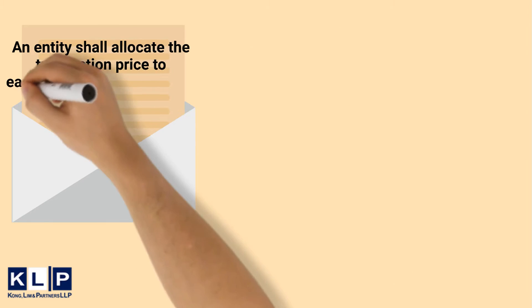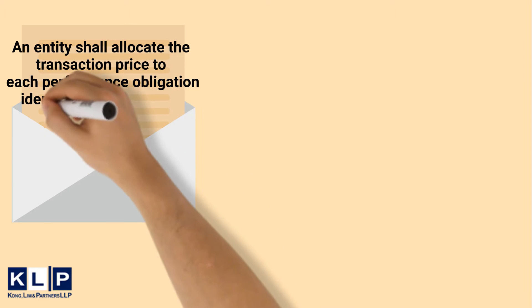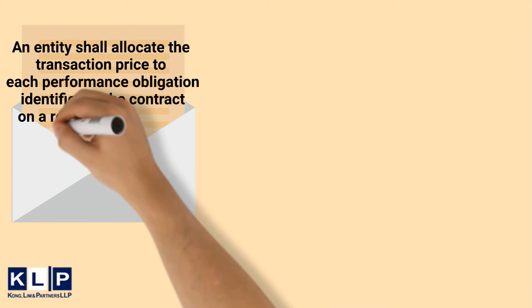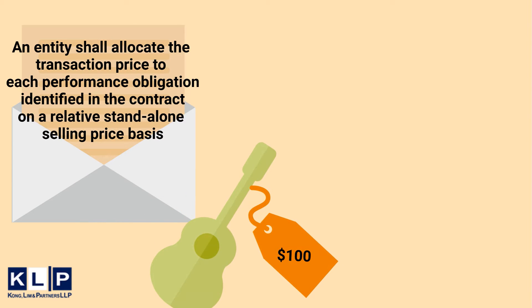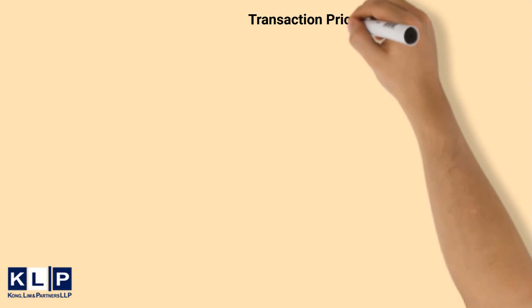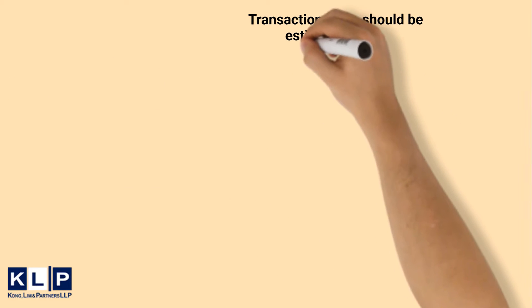The way to identify this amount is to base it on the relative stand-alone selling price of the promised goods or services. If the stand-alone selling price is not easily identifiable, the price should be estimated using the following methods.